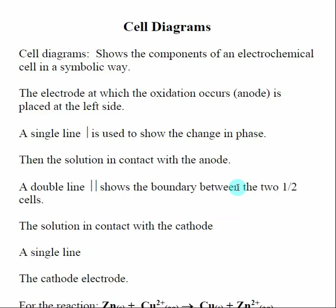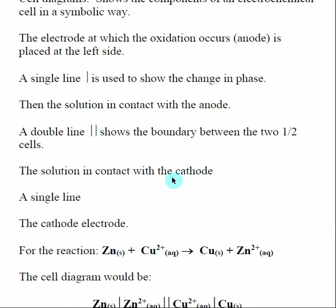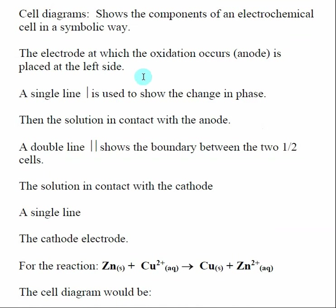Before we move forward with redox reactions we need to talk about cell diagrams. Cell diagrams are a way of representing what is going on in an electrochemical cell using symbols, making it more obvious what the redox reaction and oxidation reaction are. By definition, the left-hand side of the cell diagram is the electrode — the anode — used for the oxidation reaction.